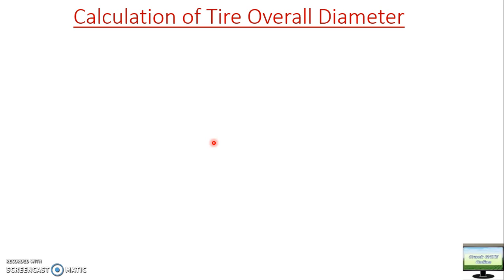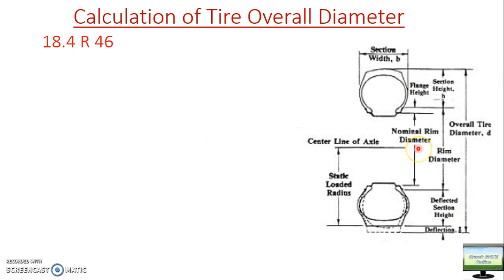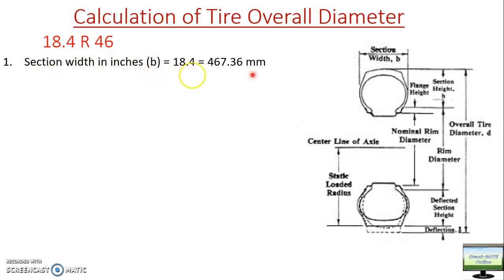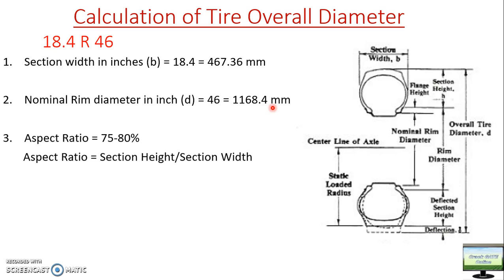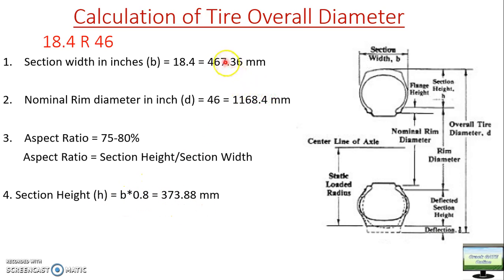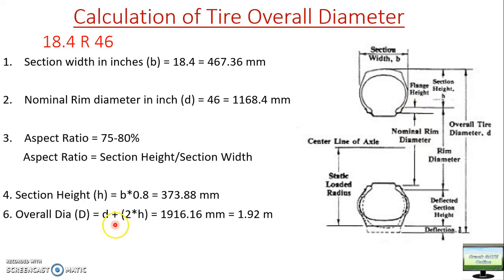Now we will see how to calculate tire overall diameter — this is the most important section of this video. Taking the same radial tire example 18.4 R46: step one, section width 18.4 inches; step two, nominal rim diameter 46 inches = 1168.4 mm; step three, aspect ratio is given as 80%, so section height h = 80% of section width. Overall tire diameter = nominal rim diameter D plus twice the section height (D + 2h).